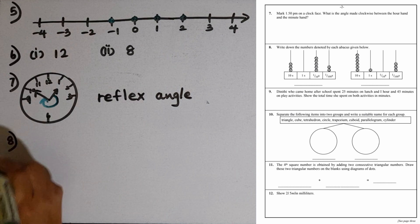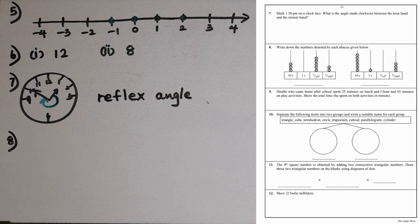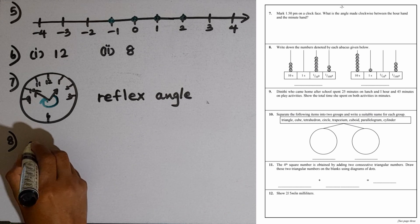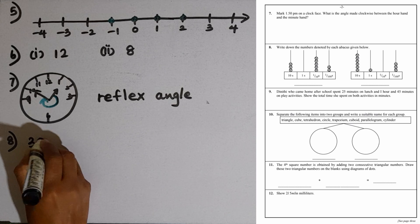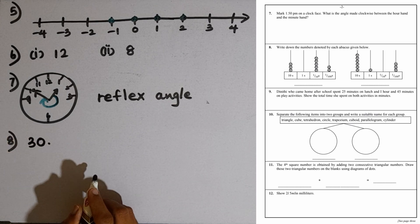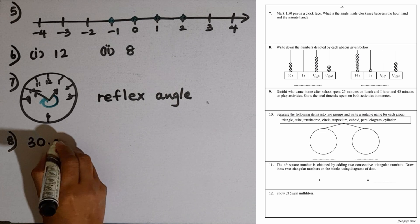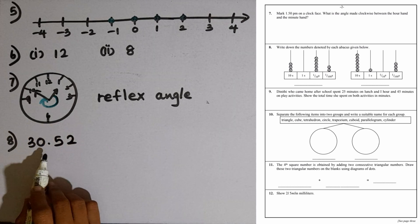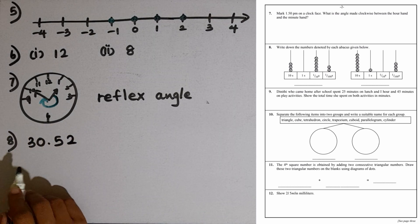Question number eight: Write down the numbers denoted by each abacus given below. In the first abacus, 10th rod has 3 counters, 1st rod no counters, so 30 point. In the 10th rod we have 5 counters, last rod 2. So 30.52 is the decimal number represented by the first abacus.